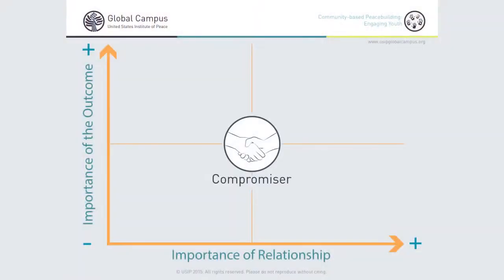A compromiser is somebody who wants to maintain the relationship but is also interested in the outcome. They're in the middle because they're trying to find that balance between getting an outcome that is meaningful to them and maintaining the relationship.